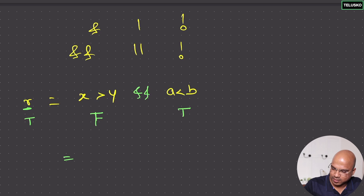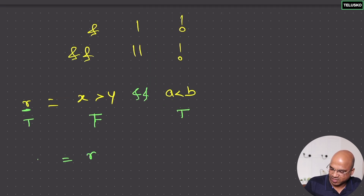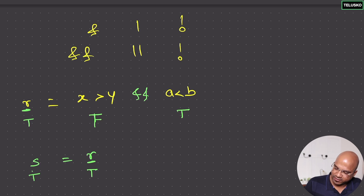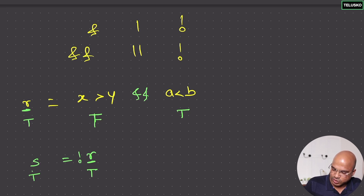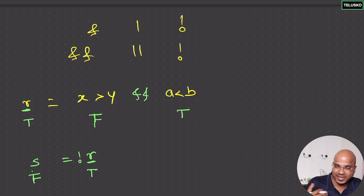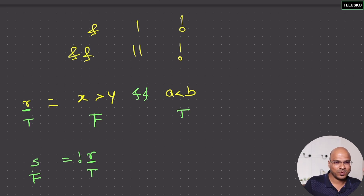If you already have a boolean value r and you want to save it in s, the value copies directly. But if you put an exclamation mark before r, it gives you the reverse — if r is true, s will be false. This is very useful when working on projects where you have data and need to toggle or change conditions based on that data.